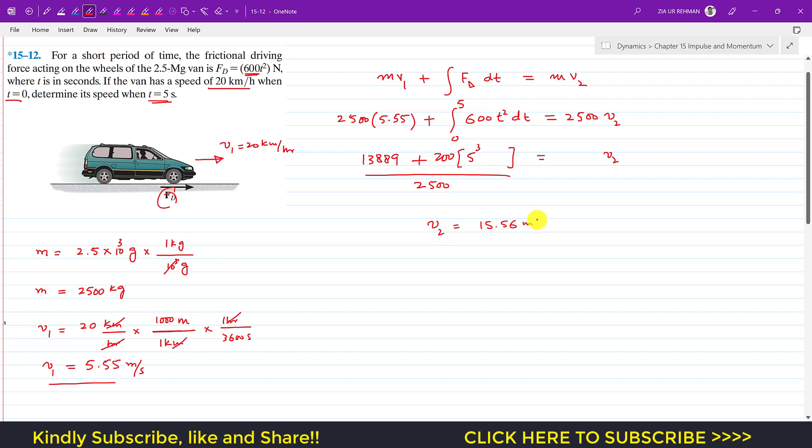If you want to convert it into km/h, this v₂ is 15.56 meters per second multiplied by—since 1 km is 1000 meters and 1 hour is 3600 seconds.